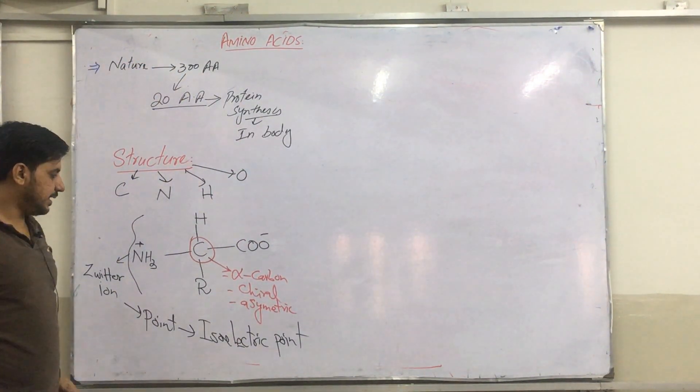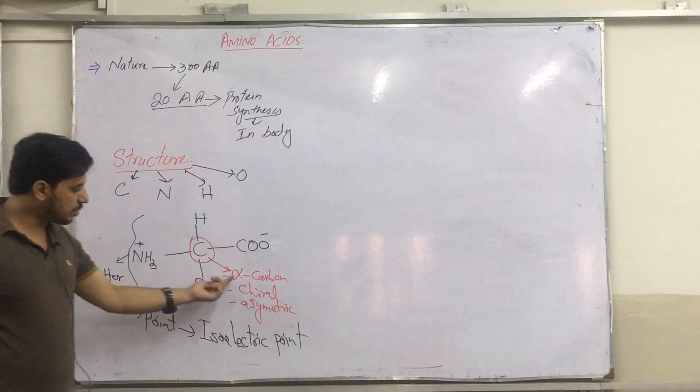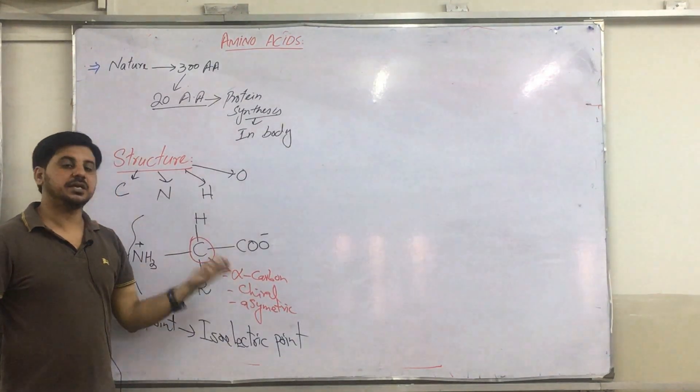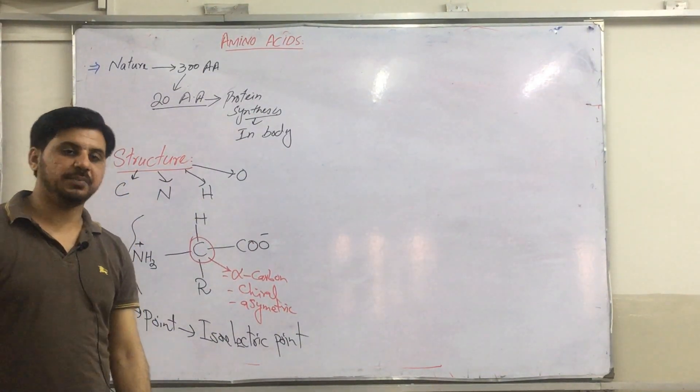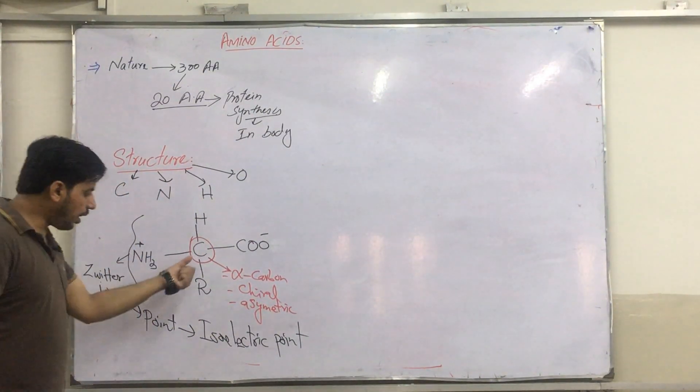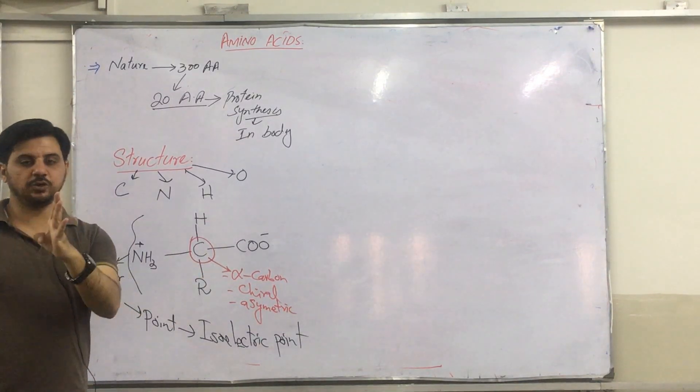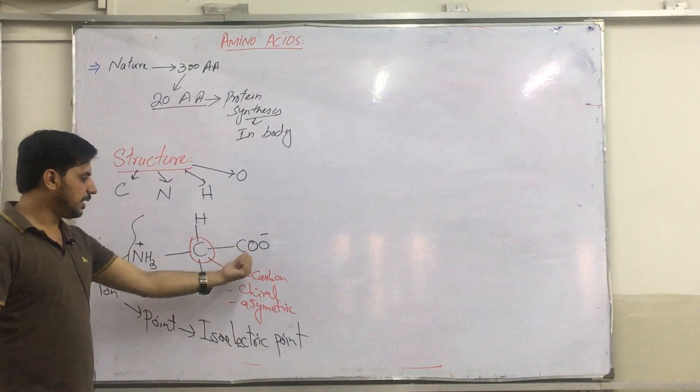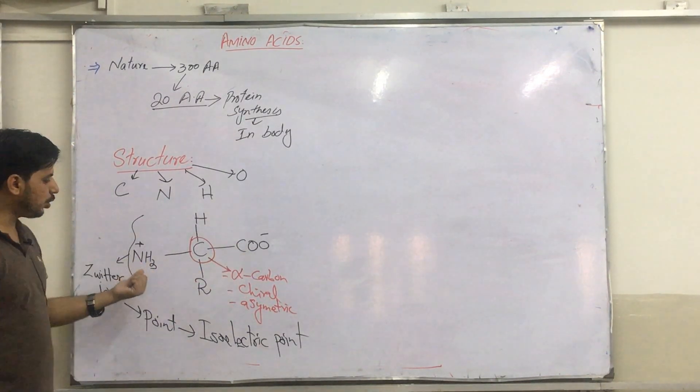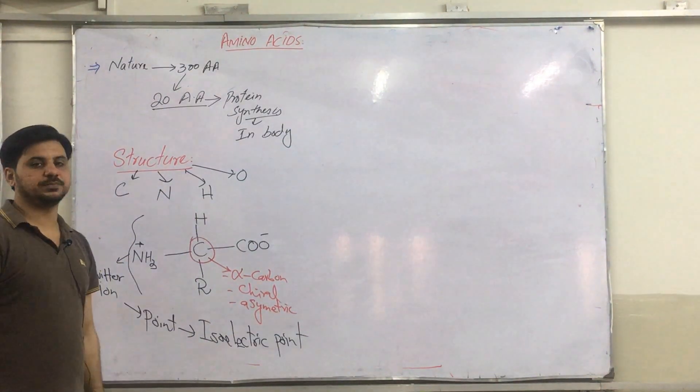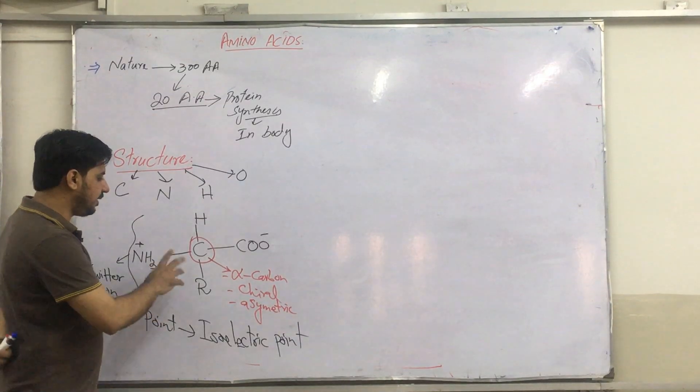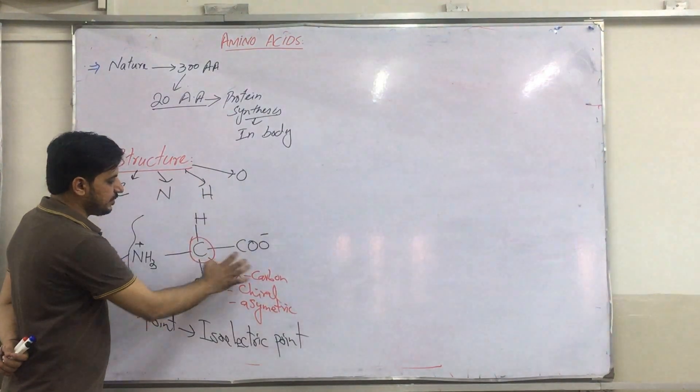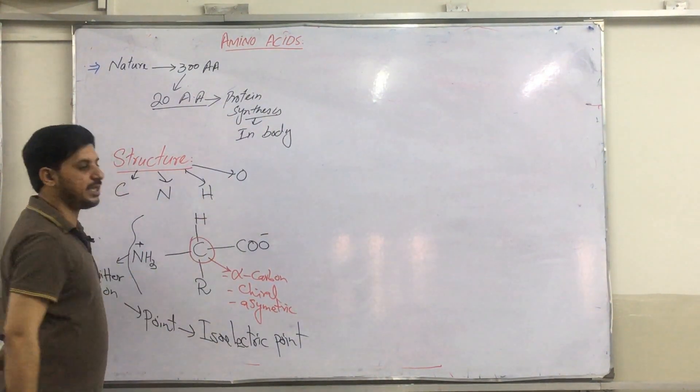And generally, it has a central carbon which is called alpha carbon. It can also be called chiral carbon or asymmetric carbon. Why? Because it has four different groups. What are those different groups? Carboxyl group, amino group, R group, and H group. And in all amino acids, you will find a common thing: the carboxylic group, amino group, as well as H.